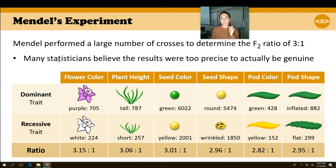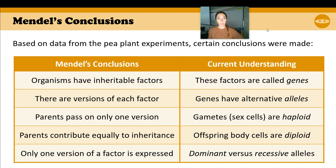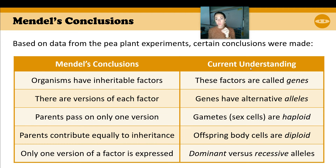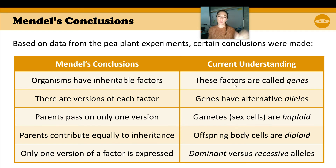Interestingly, some statisticians believe his results were too precise to actually be genuine — I've never seen that noted before. He did use a lot of data to show these percentages, figuring out the numbers of purple and white and then calculating the ratio. Here were his conclusions. He knew there were factors that were passed on — inherited — and we now call those genes. He said there were versions; we now call those alleles. He said parents only pass on one — we call the gametes haploid — and then they come together, which is called diploid. And there's only one version that is expressed. This is our current understanding, which we've already gone through — we're just linking it back to Mendel.